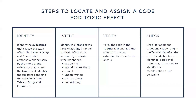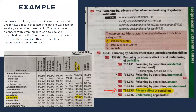Step four: check for additional codes and sequencing in the tabular list. After the correct code has been identified, additional codes may be needed to identify the manifestation of the poisoning — the sign or symptom that occurred because of the poisoning. These include signs, symptoms, related conditions, or other manifestations caused by exposure to the substance. Always look up the code found in the Table of Drugs in the tabular list to confirm the code is correct and complete.